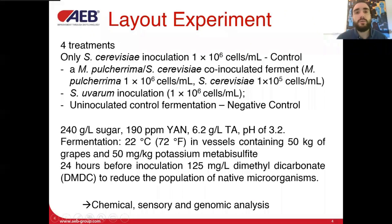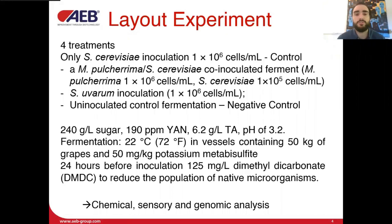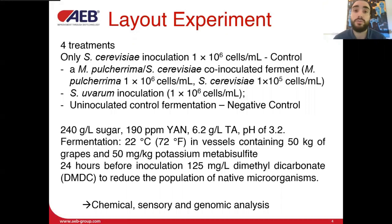The experiment included a positive control inoculated with only Saccharomyces cerevisiae, and a negative control that was uninoculated. The treatments were co-inoculation of Metschnikowia pulcherrima and Saccharomyces cerevisiae, and single inoculation of Saccharomyces uvarum. The fermentation was carried out at 72°F, and to better understand the impact of these strains, the native population was reduced 24 hours before inoculation. The wines underwent chemical and sensory analysis at the end of fermentation and genomic analysis during fermentation.